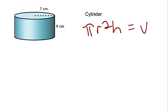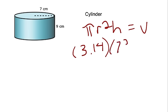This is a cylinder, and to find the volume you use the formula pi r squared h. Pi stands for 3.14, the radius is halfway across the circle on top and that is 7, so you're going to square that, and then the height of the cylinder is 9.